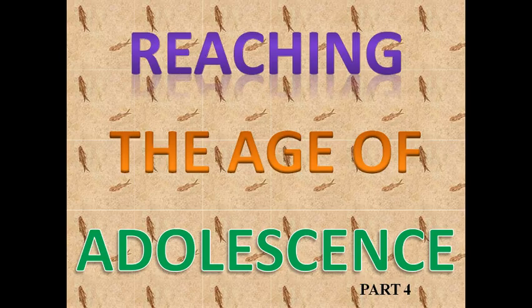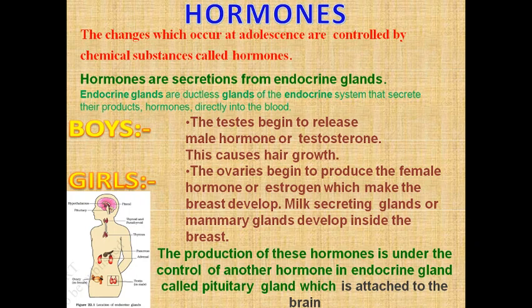Hello students, welcome to the fourth session of Chapter 10: Reaching the Age of Adolescence, Class 8. Today we will learn that the changes which occur at adolescence are controlled by chemical substances called hormones.